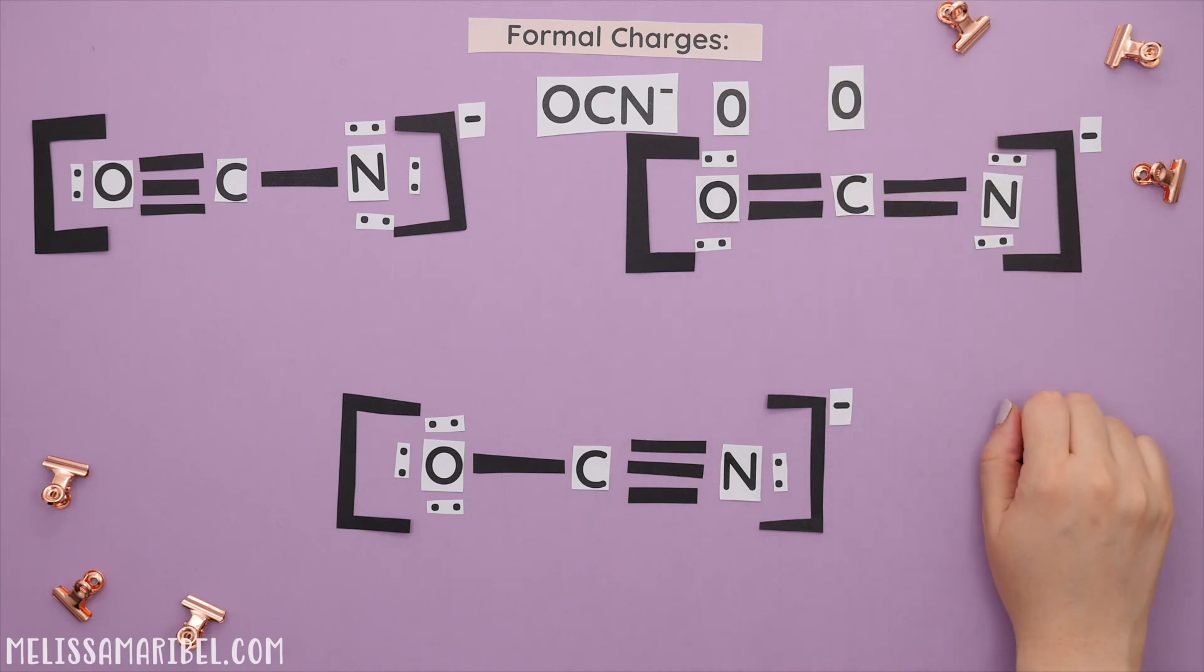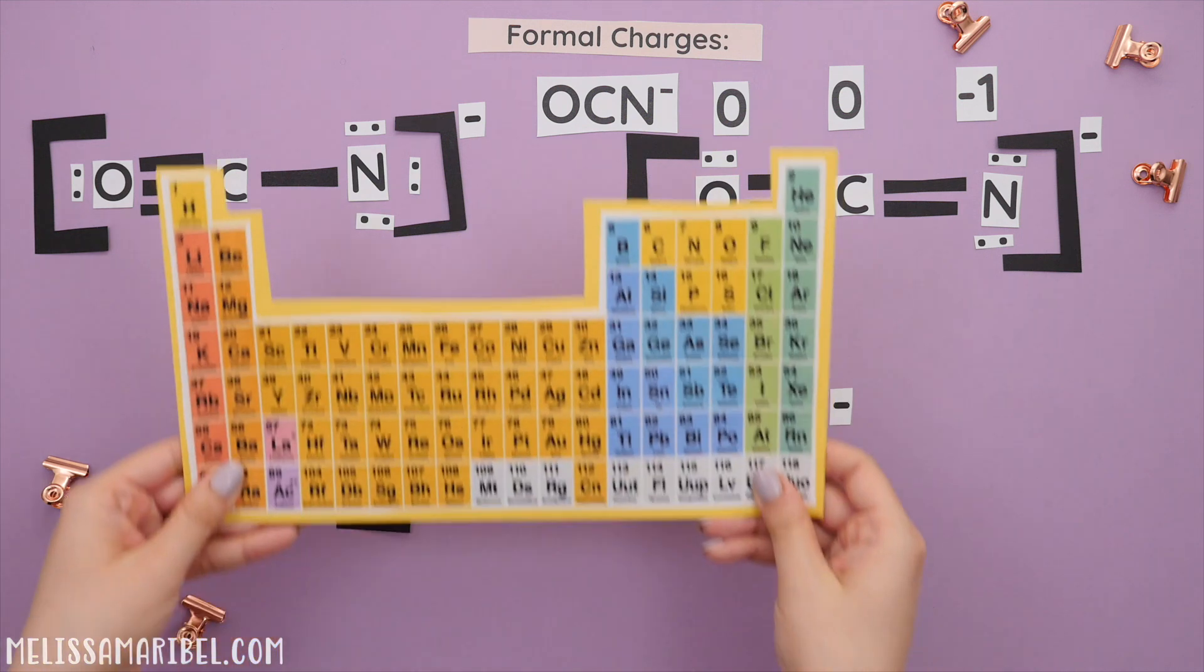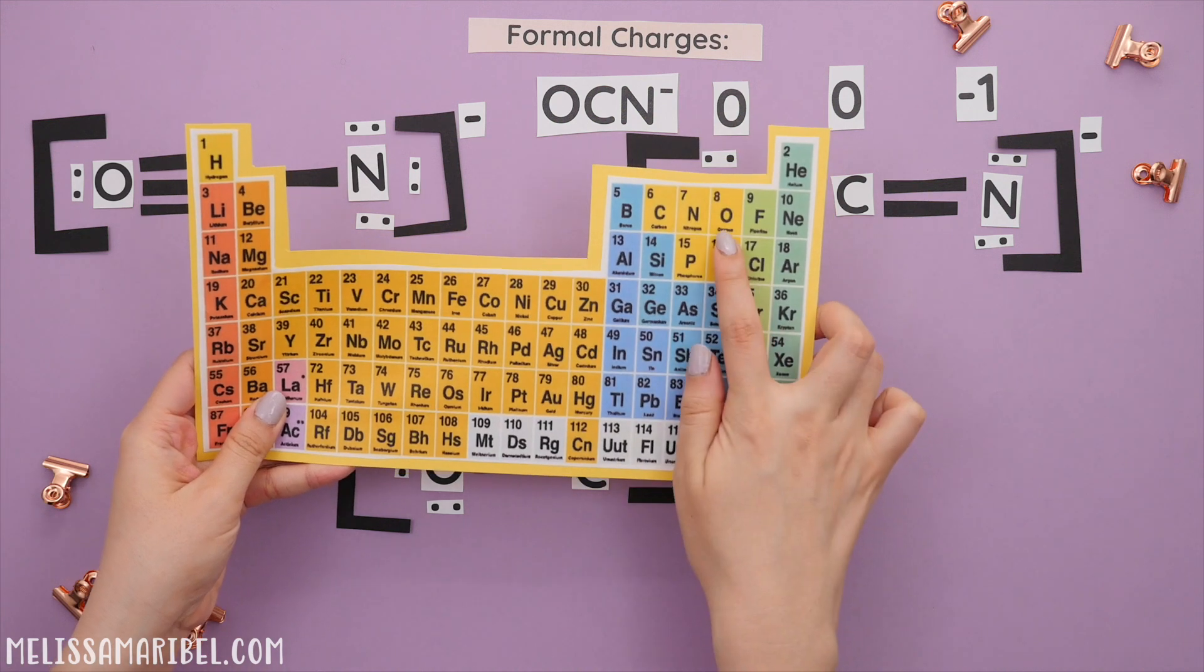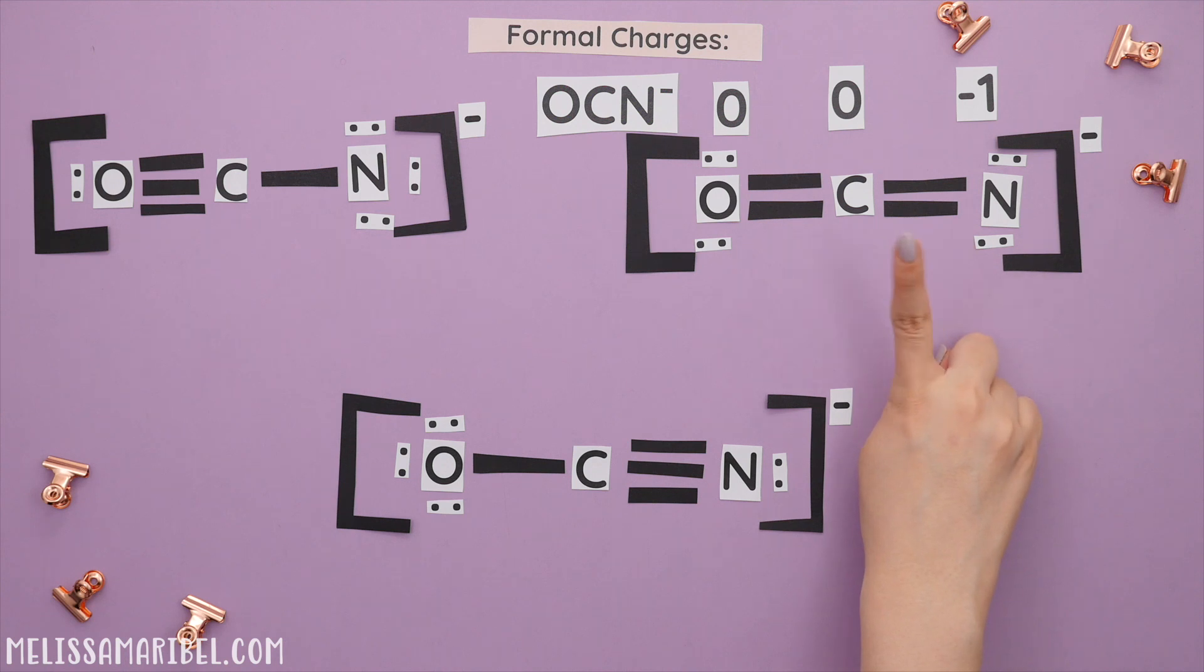Nitrogen has five valence electrons. There are two bonding electrons and four individual lone pairs. Nitrogen's formal charge is negative one. Note, the most electronegative atoms want to be negative. And looking back at our electronegativity trend, oxygen is more electronegative than nitrogen. So this structure is not the most stable since oxygen should be negative.